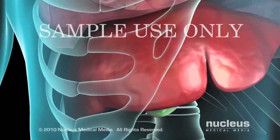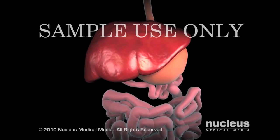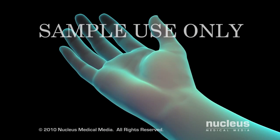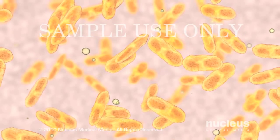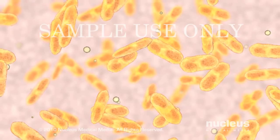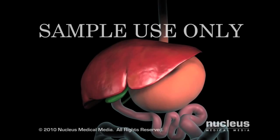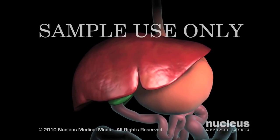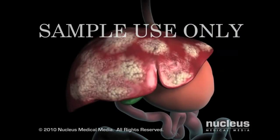A liver biopsy may be ordered to determine the cause of abnormal liver function tests, swelling or enlargement of the liver, and jaundice — the yellowish discoloration of the skin and white of the eye that develops when the serum bilirubin is elevated. Bilirubin is normally metabolized by the liver. These signs and symptoms may be due to a variety of liver conditions, including cirrhosis, hepatitis, or cancer.